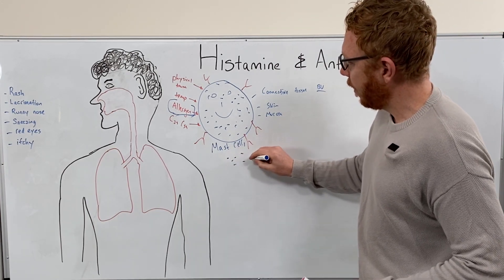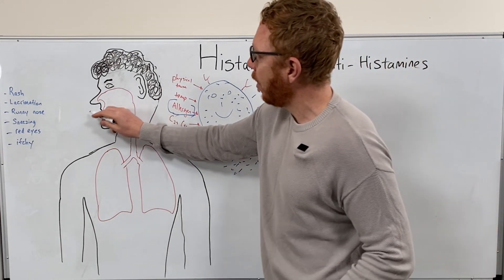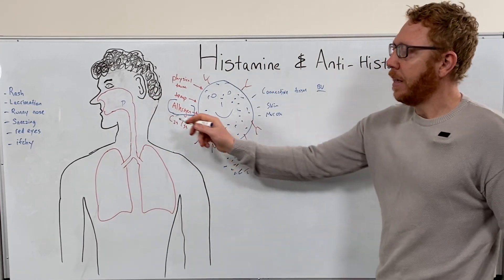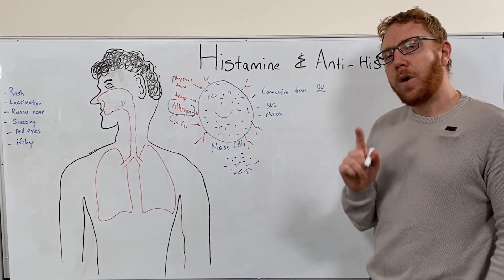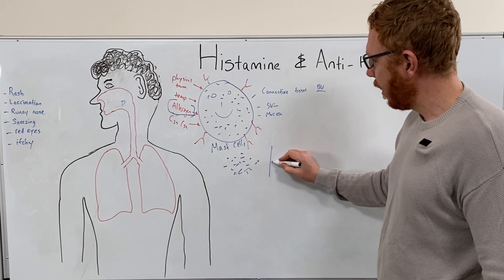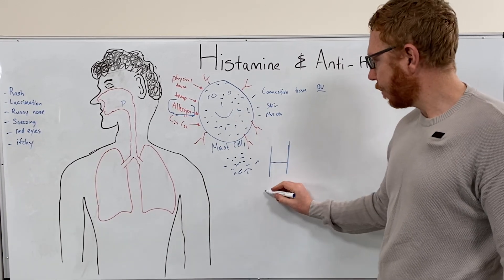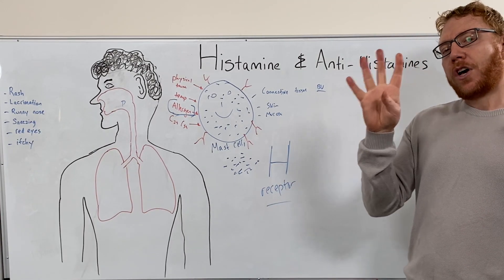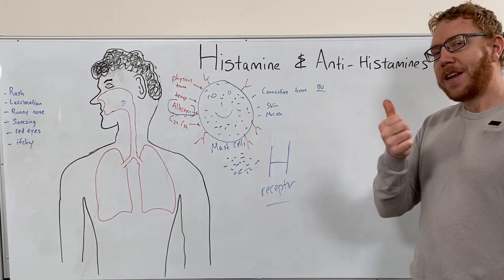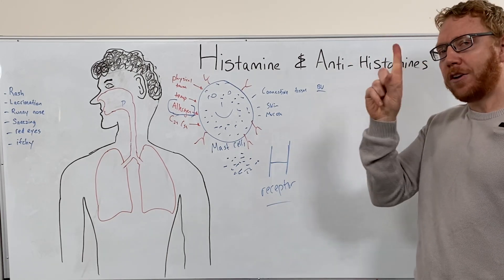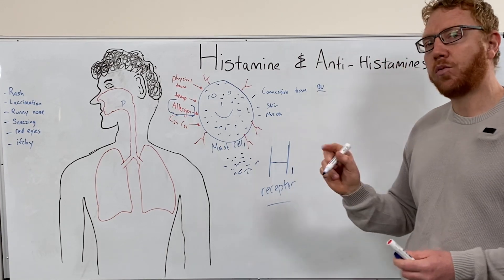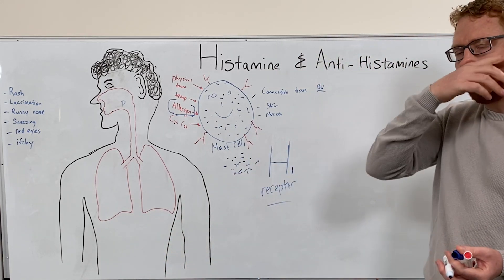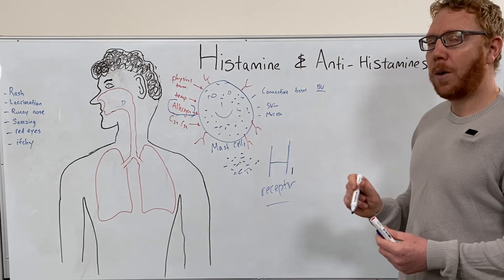The mast cell releases histamine into the local environment. Let's say pollen stays in your nasal cavity — it releases histamine into that local area. Histamine then needs a receptor. There are four types of histamine receptors: H1, H2, H3, and H4. We're going to focus on H1, which is most important for allergy. H2 is more important for gastrointestinal changes. H3 and H4 we won't focus on.